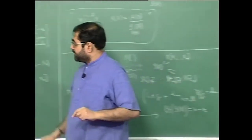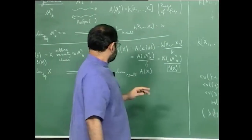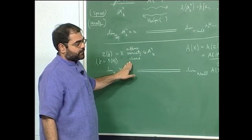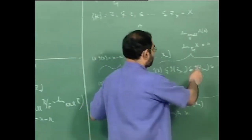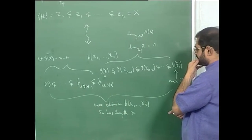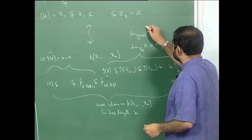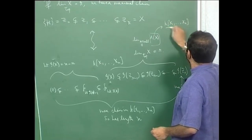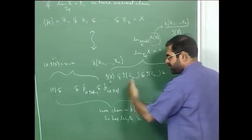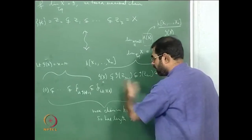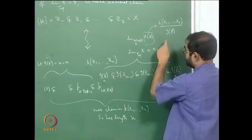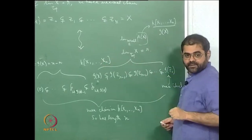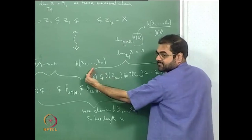Now I want to look at some special cases of subvarieties. But let me make one more statement: A(X) is the polynomial ring modulo the ideal of X. If you take this maximal chain and go mod I(X) — take the image of the whole chain in the quotient — this is a maximal chain in the polynomial ring, and when you quotient out by I(X), I(X) becomes 0.